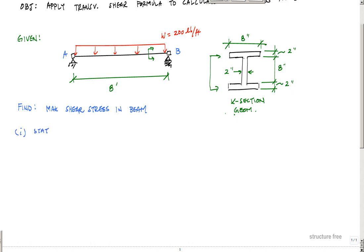This is pretty simple. This structure's boundary conditions are symmetric because Ax is going to be zero, so the boundary conditions are symmetric and the loading is symmetric. That means each of these Ay and By are both going to be equal.